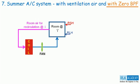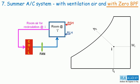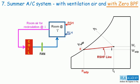Let us consider the same setup as in the previous lecture. We have a room that is required to be maintained at state I against RSH and RLH. The recirculation air comes out of the room at state I. Let us plot the state point I on the psychrometric chart. Starting from I, if we draw the RSHF line, it will intersect the saturation curve at room ADP. Up till this point, there is no change with reference to the previous case.